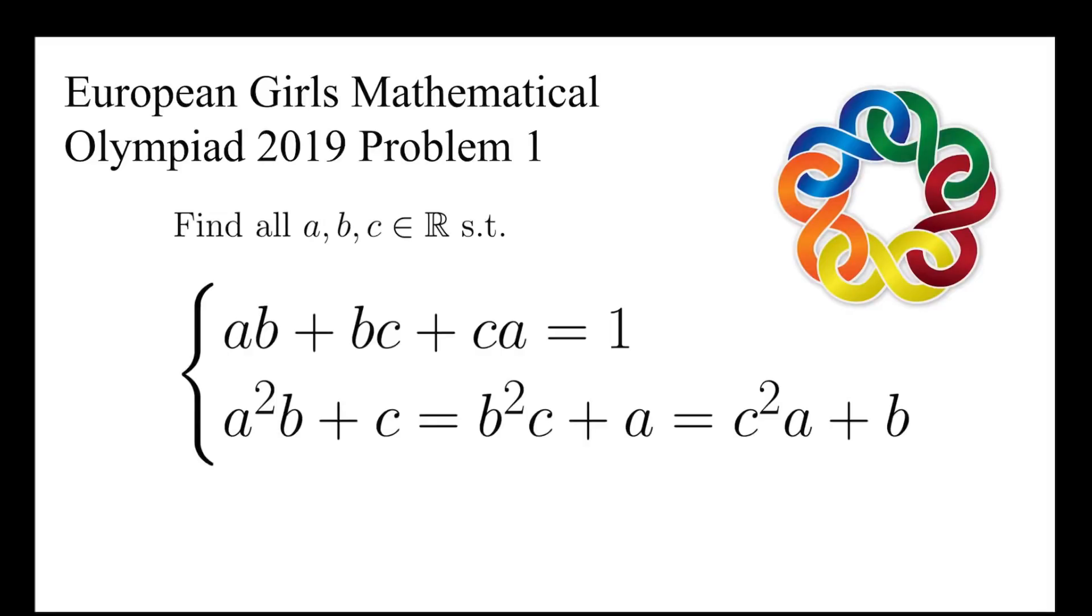Let's take a look at this problem taken from the EGMO 2019. It says find all real numbers a, b, c such that ab + bc + ca equals 1